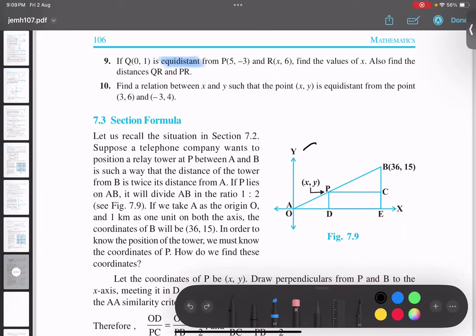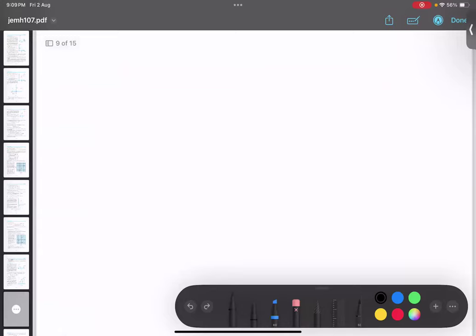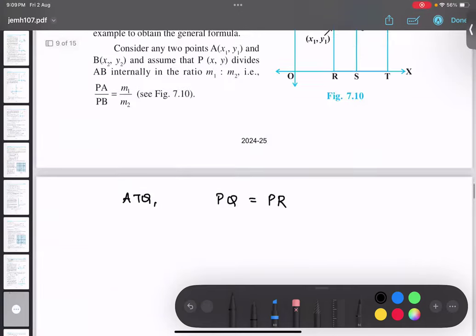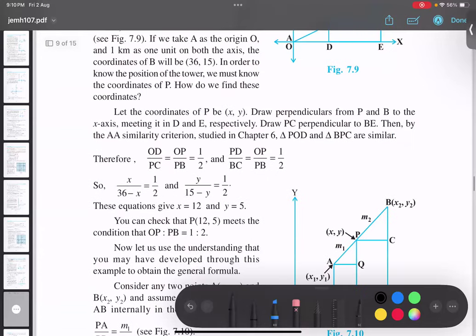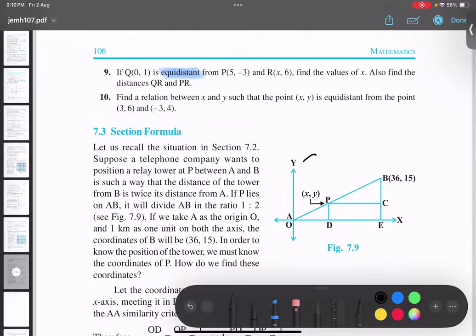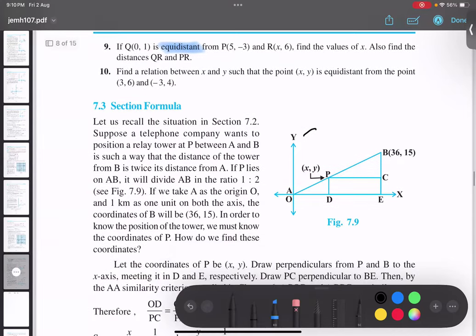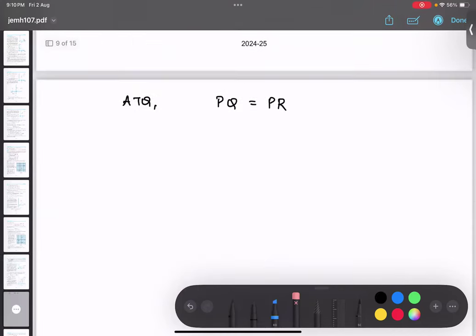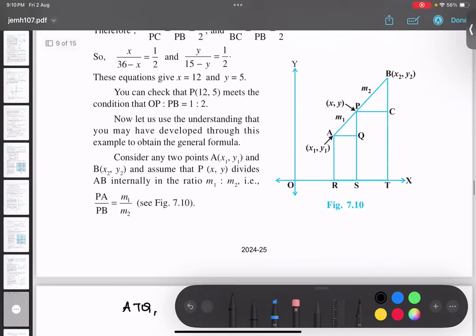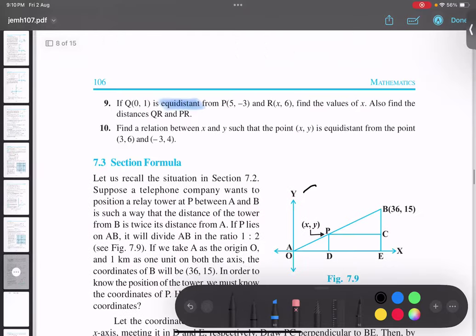Is this thing clear? So according to the question, PQ equals to PR. Yes or no? No. QP equals to QR. Sorry, my bad. QP equals to QR. Because the question is saying Q is equidistance.